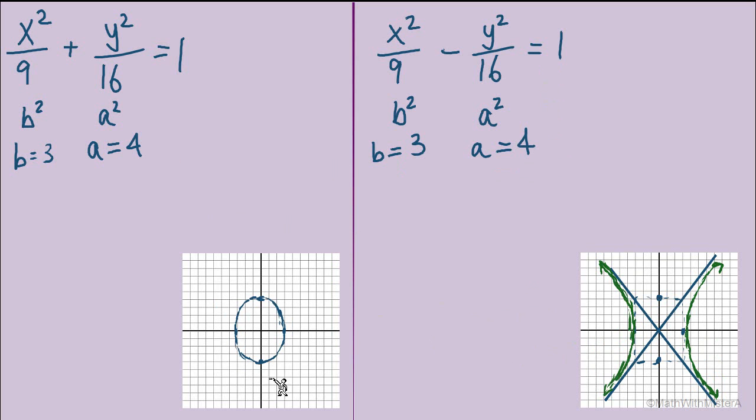With the ellipse, we close up the shape with those four points that we found from a and b. With the hyperbola, we have a couple of extra steps. Make the box to be able to find the two asymptotes of the graph and then begin the sketch, which we know will have two separate branches.